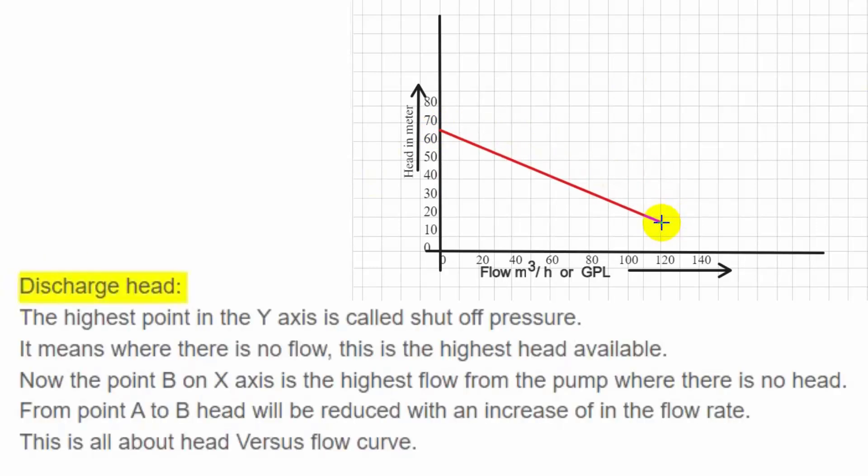Discharge head. The highest point on the Y axis is called shut off pressure. It means where there is no flow, this is the highest head available.